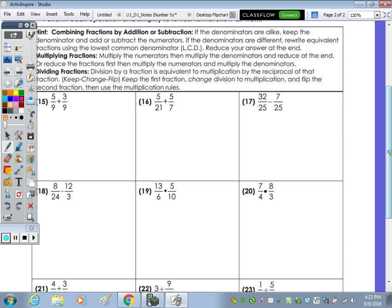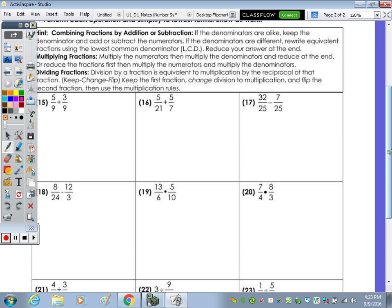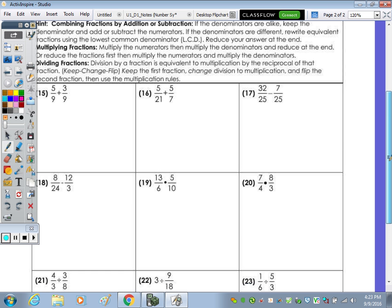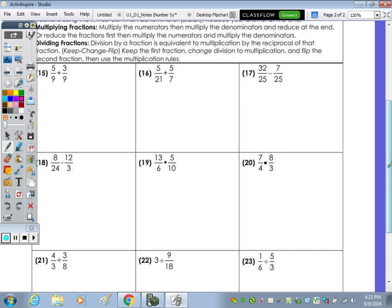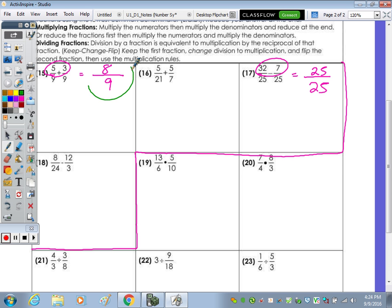Next section, we have operations with fractions. So go ahead and pause so you can read that paragraph and table. And then press play when you're ready to continue. Okay, adding and subtracting. So these questions here, the first four. In order to add or subtract, you must have common denominators. The ones that do are fifteen and seventeen. So the first thing you want to do is rewrite the denominator. That stays the same. And then you combine the numerator. 5 + 3, 8. 32 - 7 is 25. Once you do that, you go back and look. Can you reduce them? 8/9 cannot be reduced. That's the answer. 25/25 can be reduced. You can divide 25 by 25 and get 1.